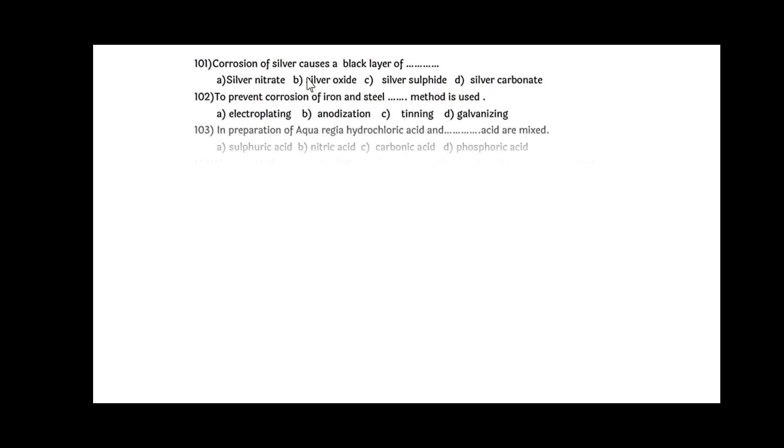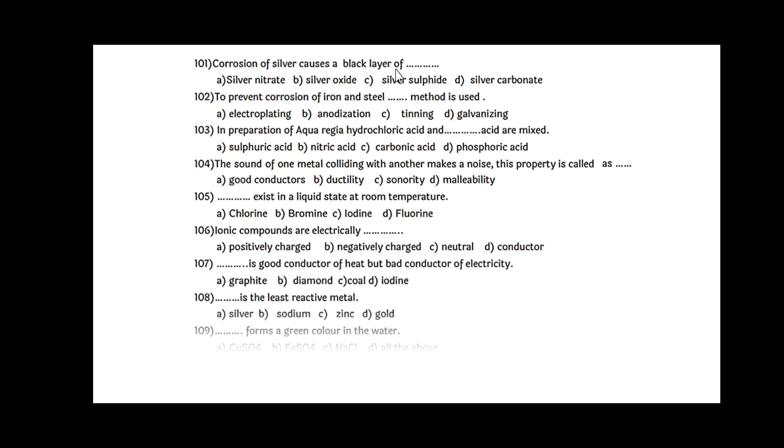Corrosion of silver causes a black layer of silver sulphide. To prevent corrosion of iron and steel, galvanizing method is used. In preparation of aqua regia, hydrochloric acid and nitric acid are mixed.